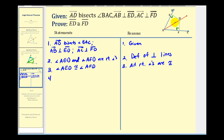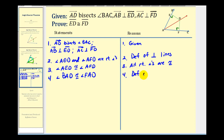Now, if ray AD bisects angle BAC, we know that angle EAD would be congruent to angle FAD. This is by definition of an angle bisector. So this angle here is congruent to this angle here.